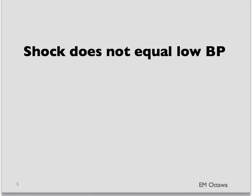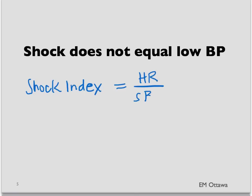Remember, patients do not need to be hypotensive if they are in compensated shock. One useful rule is the shock index, which equals heart rate divided by systolic blood pressure. If this number is over 1, that signifies a sicker patient — if your heart rate is more than your systolic blood pressure, you have to worry about the patient.